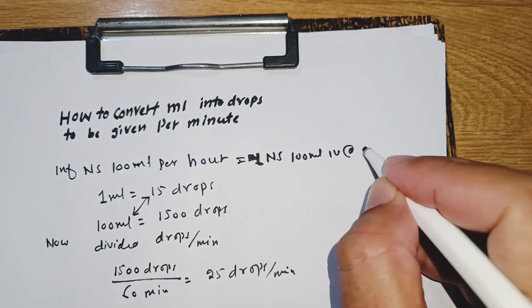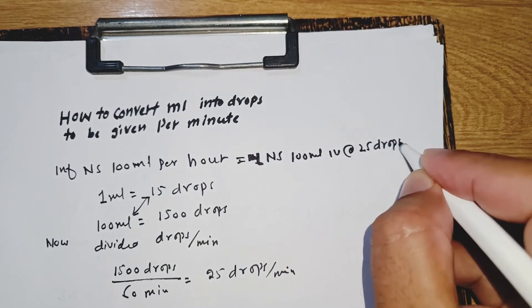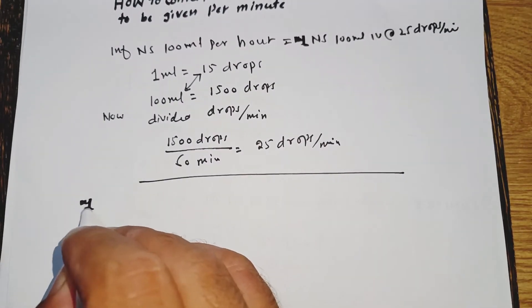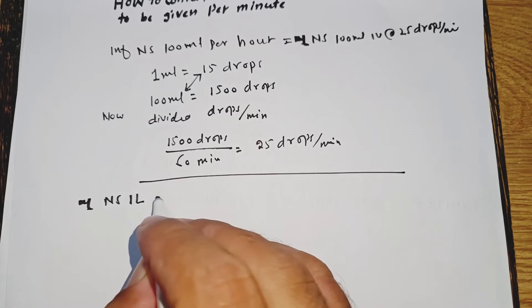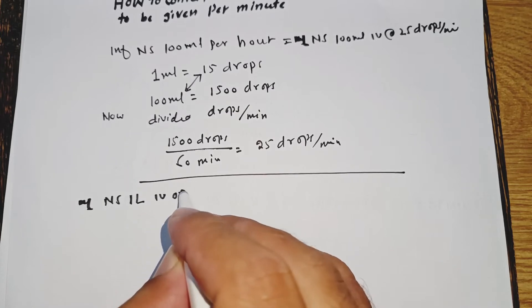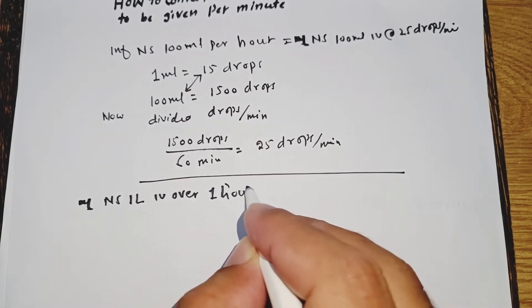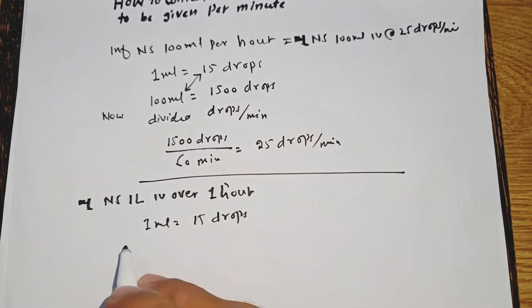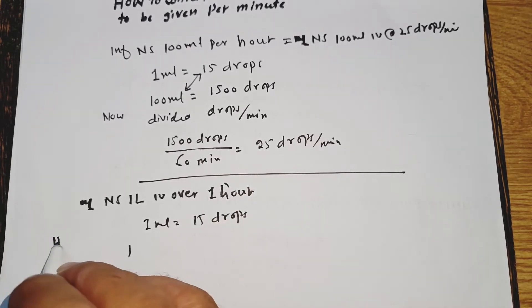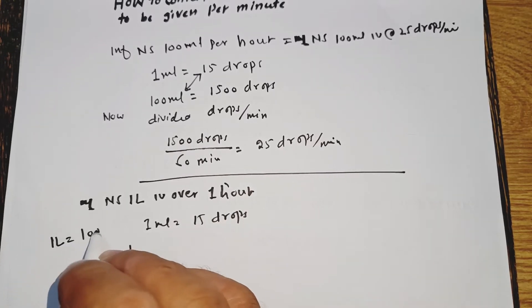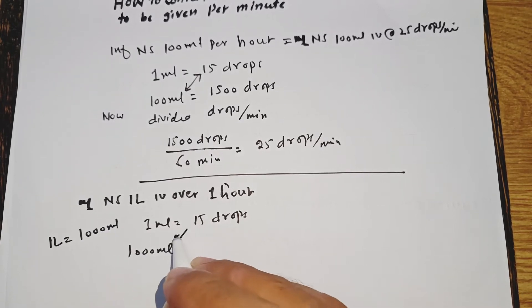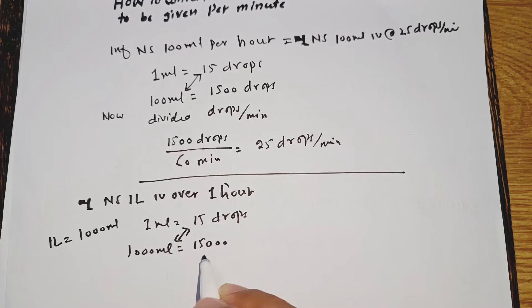Another example: infusion normal saline 1 liter IV over one hour. As we know, 1 mL is equal to 15 drops. One liter is equal to 1000 mL, so 1000 mL multiplied by 15 equals 15,000 drops.